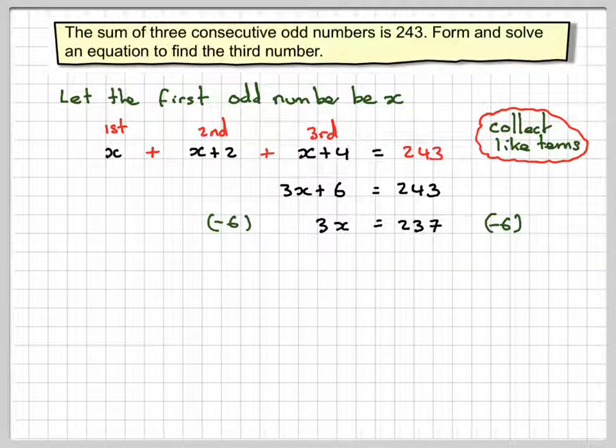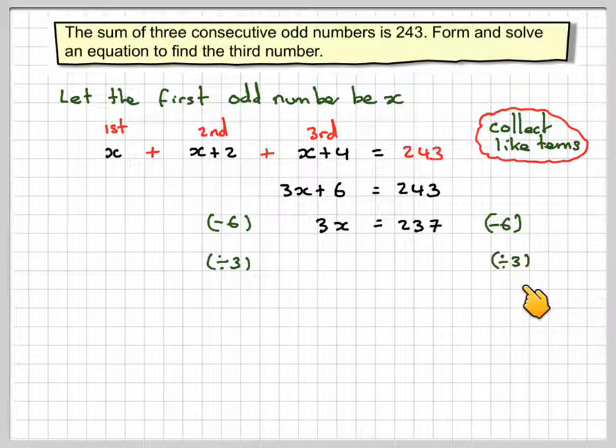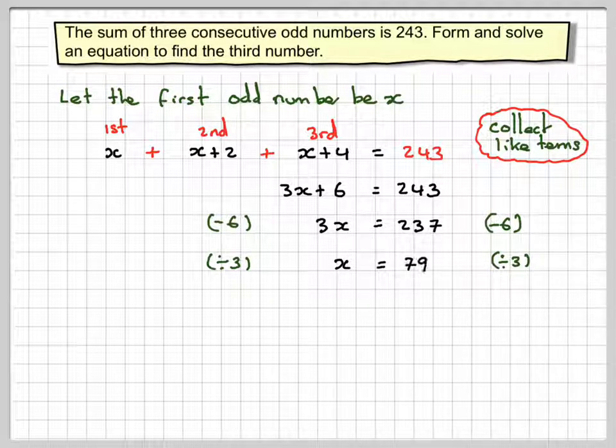So 3 times x, the opposite is to divide both sides by 3. So you get that x is equal to 79.